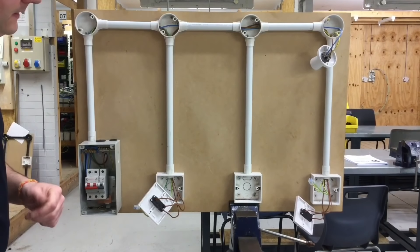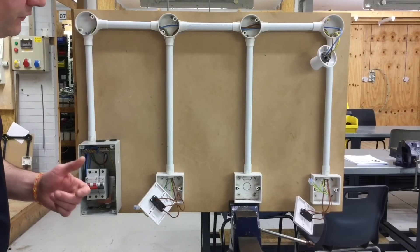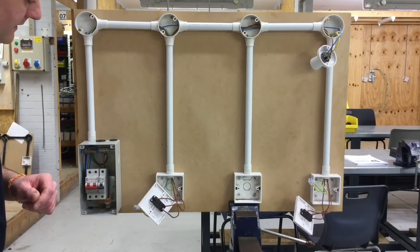So there we have it, that is our two-way switching method employed when wiring in conduit for a lighting circuit. Hope this video has been some help.